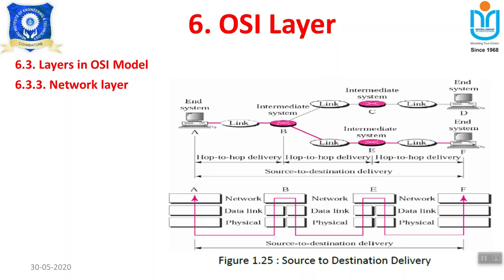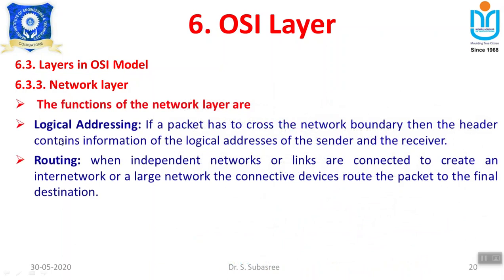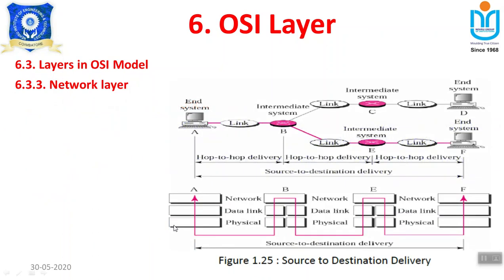In summary, there are two important functionalities of the network layer: providing logical addressing (stamping source and destination addresses on packets) and providing routing information. In this session we have discussed the OSI model — what layers are available, and the responsibilities of the Physical layer, Data Link layer, and Network layer. Thank you.